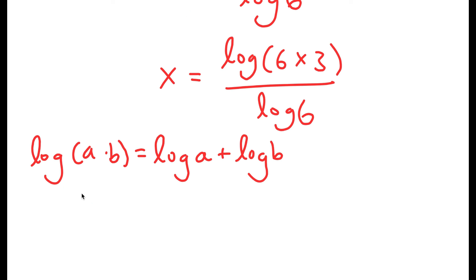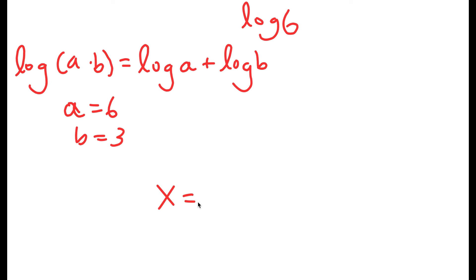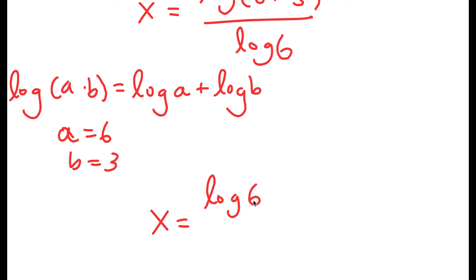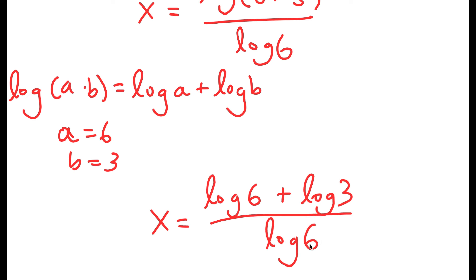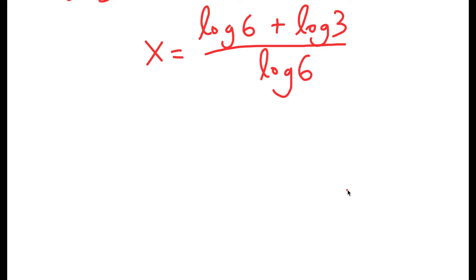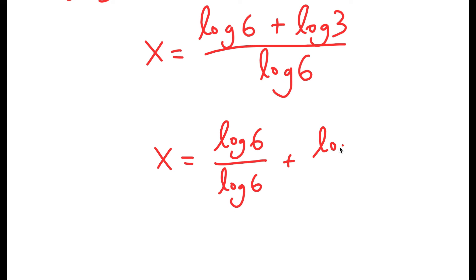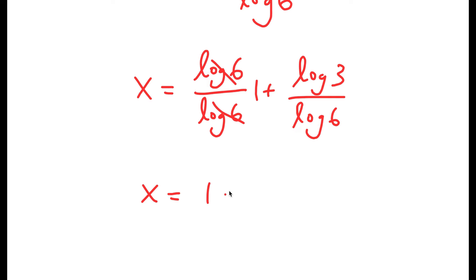this is equal to log a plus log b. So in this case, a is 6 and b is 3. So I get x is equal to log of 6 plus log of 3 over log of 6. Now I can rewrite this as log of 6 over log of 6 plus log 3 over log 6. Now log 6 and log 6 cancel out to get 1. So I get x is equal to 1 plus log 3 over log 6.